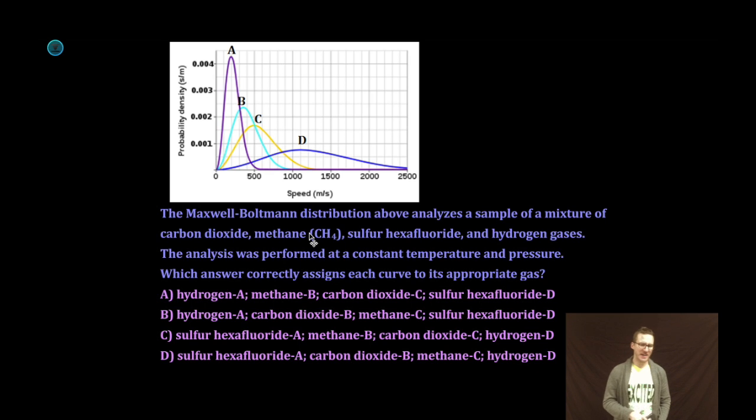All right, next question, another different Maxwell-Boltzmann distribution. This time we have four samples of different gases all at the same temperature. We've got carbon dioxide, methane, sulfur hexafluoride, and hydrogen gases. Our job is to identify which correctly assigns each curve to its appropriate gas.